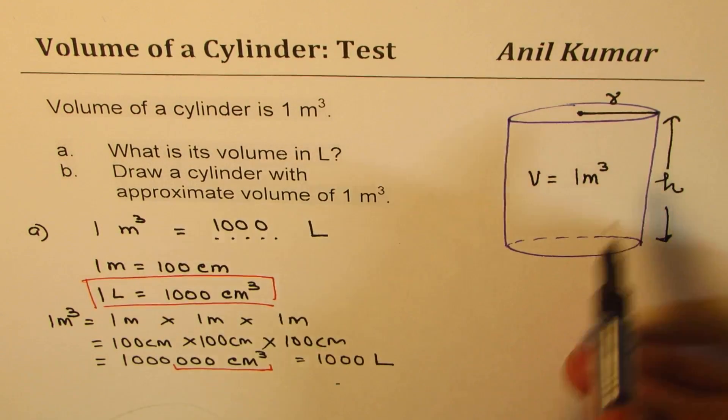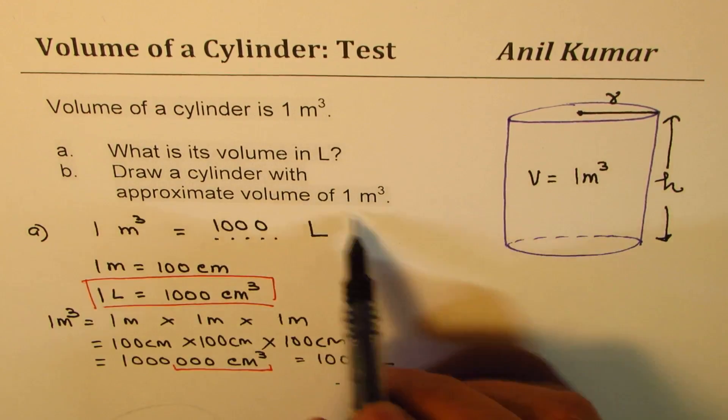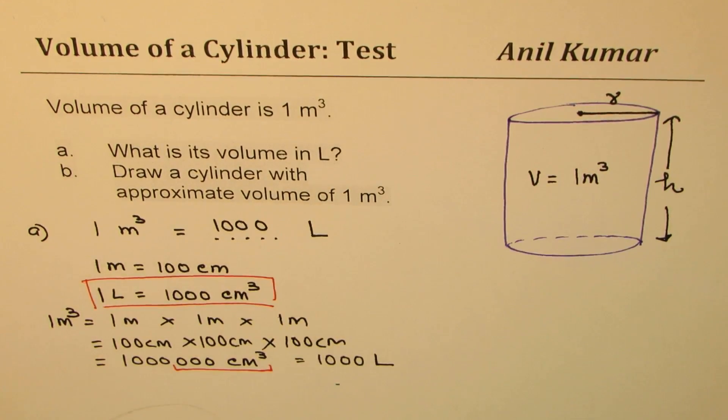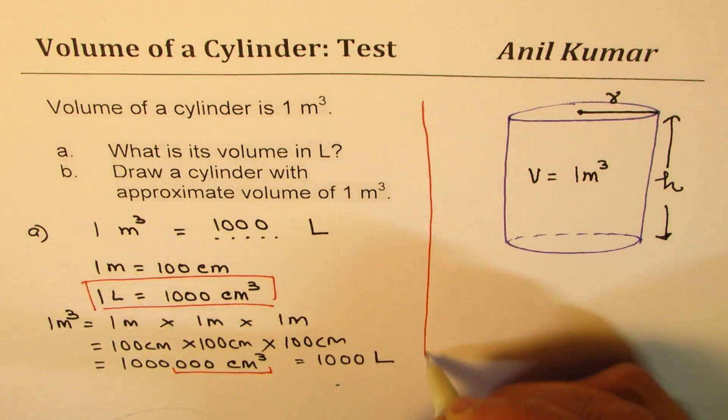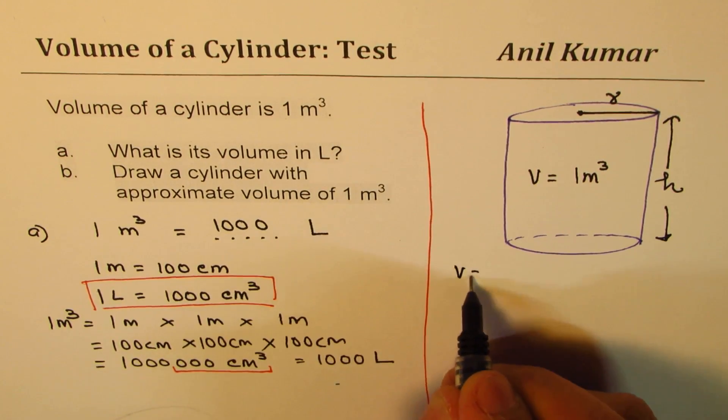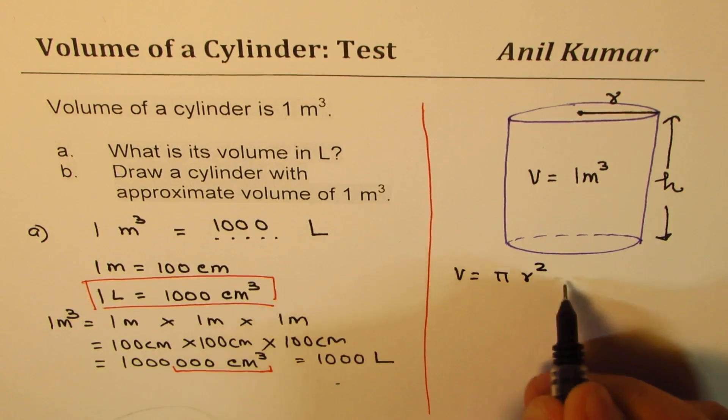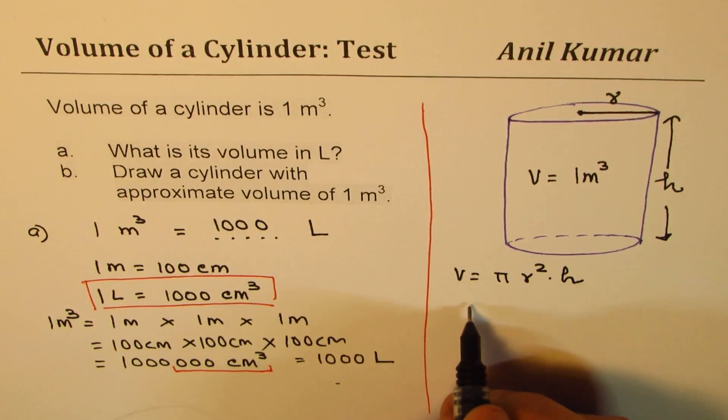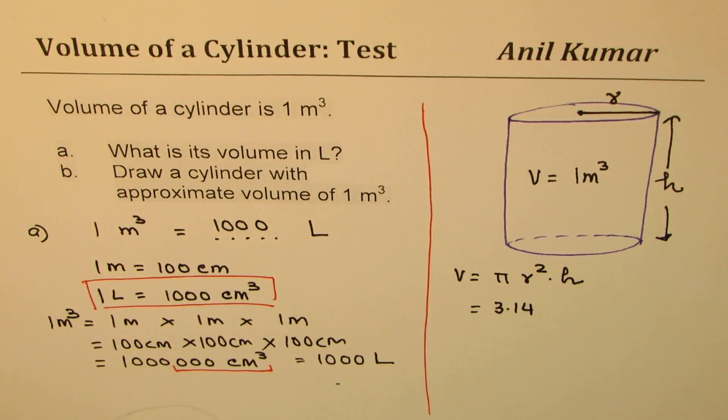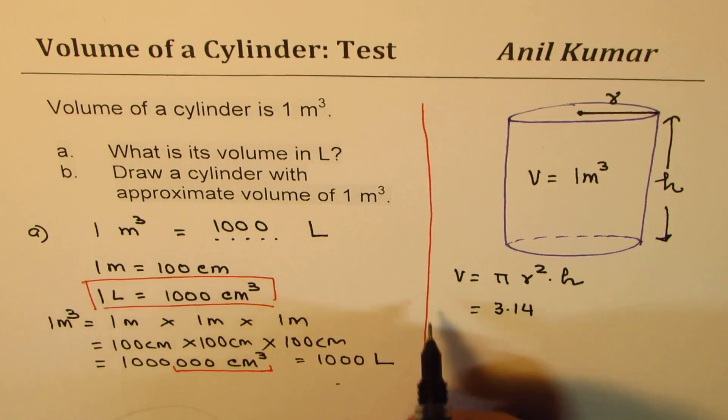Now the question remains, which is part B, draw a cylinder, which has so much of capacity. So we are looking for capacity of one meter cube. How do we write down different dimensions? So we will use the formula, which is volume is pi radius squared times height, where pi is 3.14.